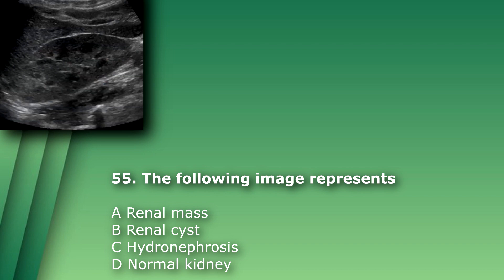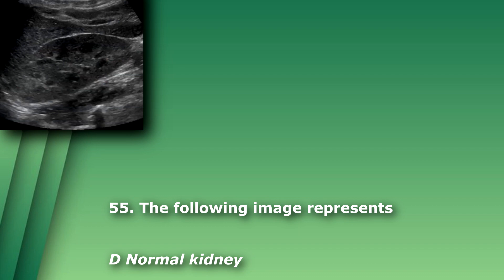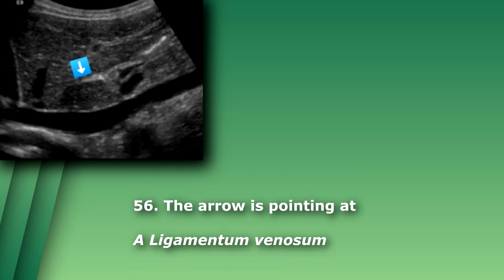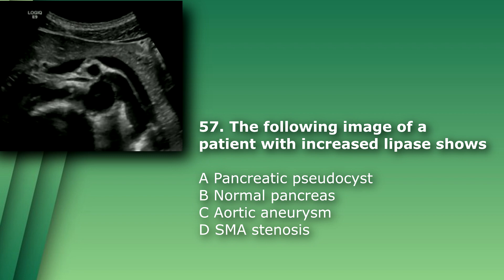Question 55: The following image represents: A) renal mass, B) renal cyst, C) hydronephrosis, D) normal kidney. The answer is D, normal kidney. Question 56: The arrow is pointing at — A) ligamentum venosum, B) GB fossa, C) ligamentum teres, D) hepatic ligament. The answer is A, ligamentum venosum.